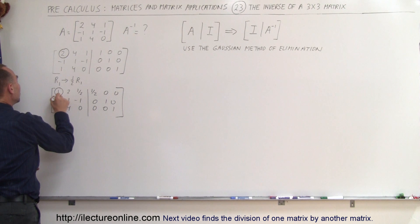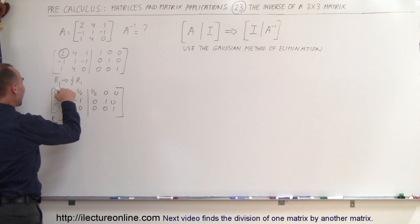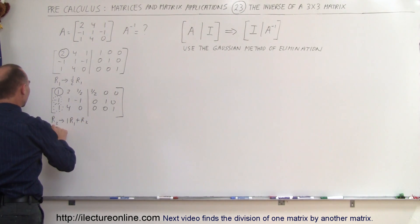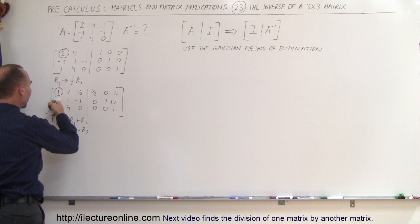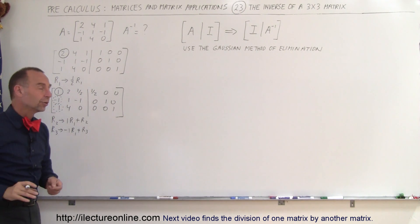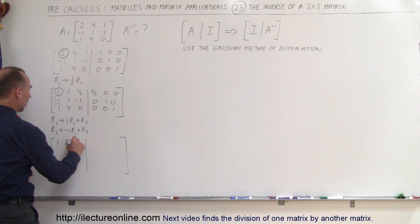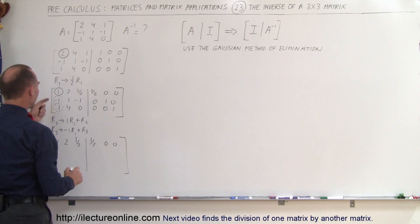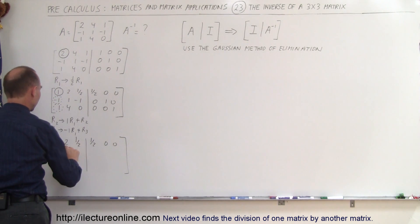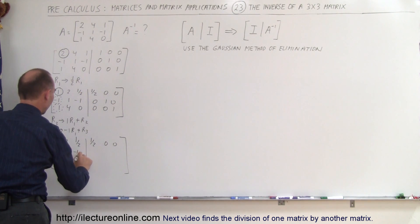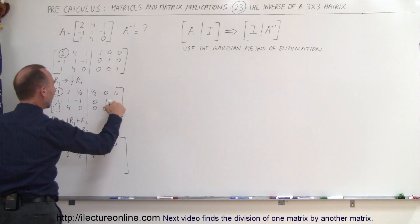Second step: we're going to use the 1 in the first row to turn the entries below it into 0s. We take the second row and replace it by adding negative 1 times row 1 to it, and replace the third row by adding negative 1 times row 1 to it. For row 2: 0, 3, negative one half, one half, 1, 0. For row 3 entries: 0, 2, negative one half, negative one half, 0, and 1.